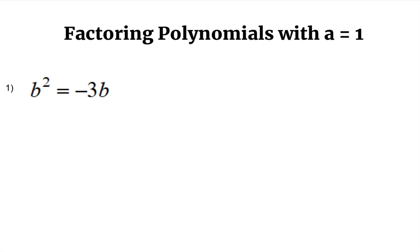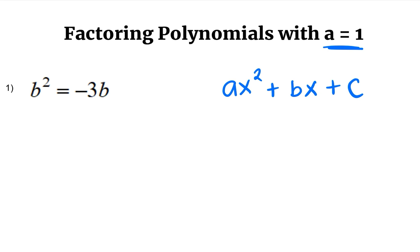Welcome to Math City with Ms. G. Today we are going to talk about factoring polynomials with a leading coefficient that is equal to 1. So what is a leading coefficient? Going back to the standard formula for polynomials, we will have AX squared plus BX plus C. The A in the title is this A, the leading coefficient. So when that is equal to 1, this is the topic it is referring to.